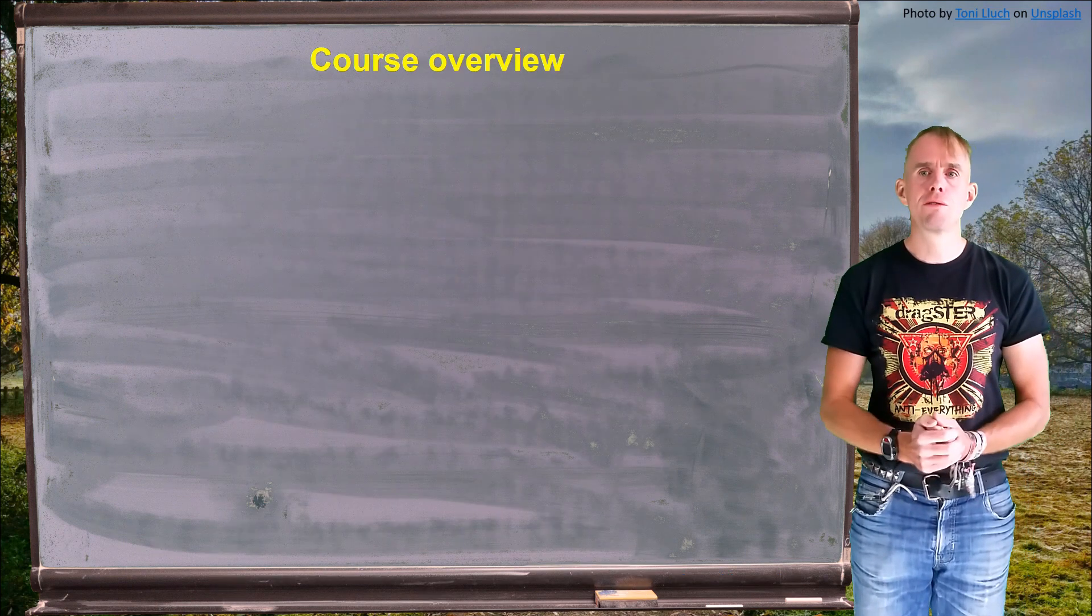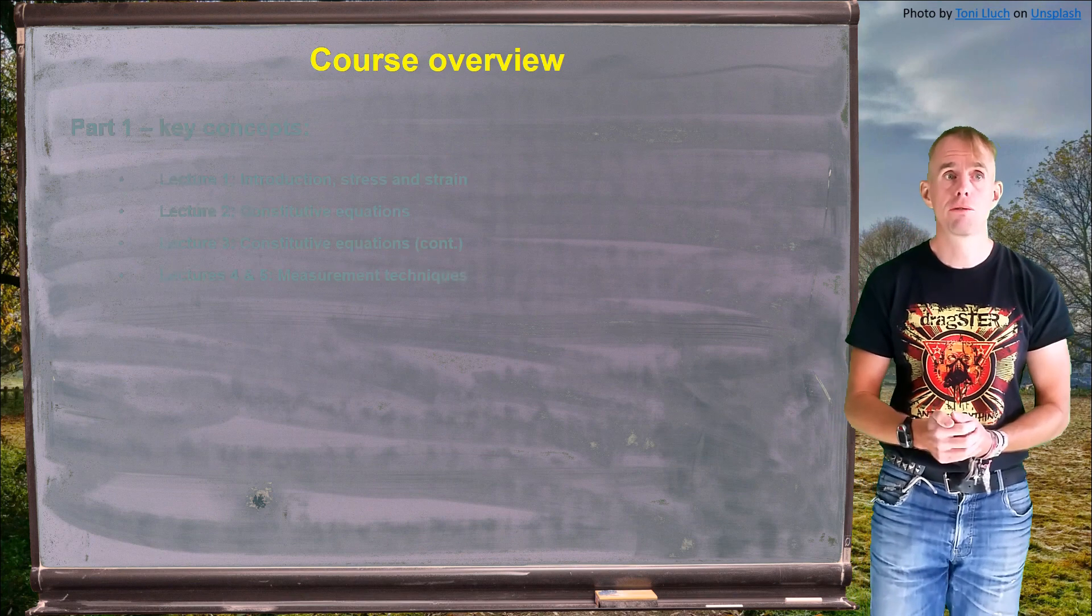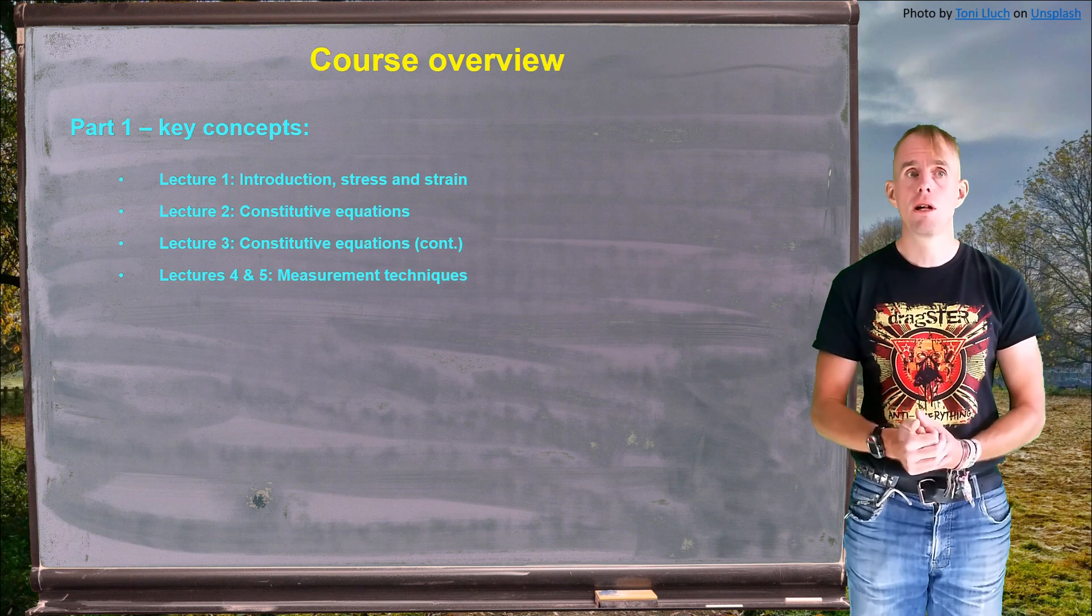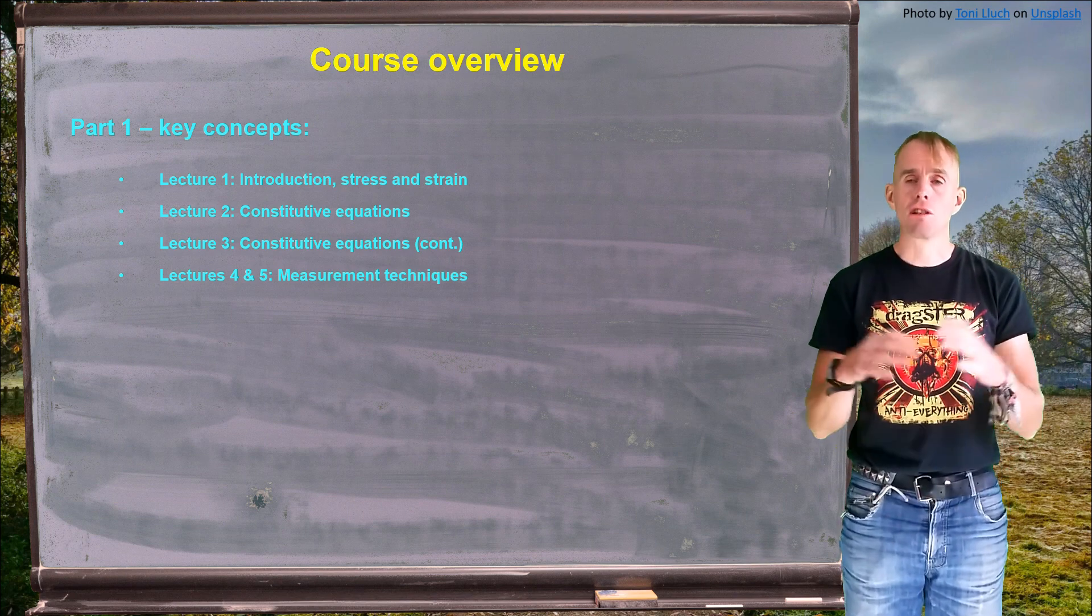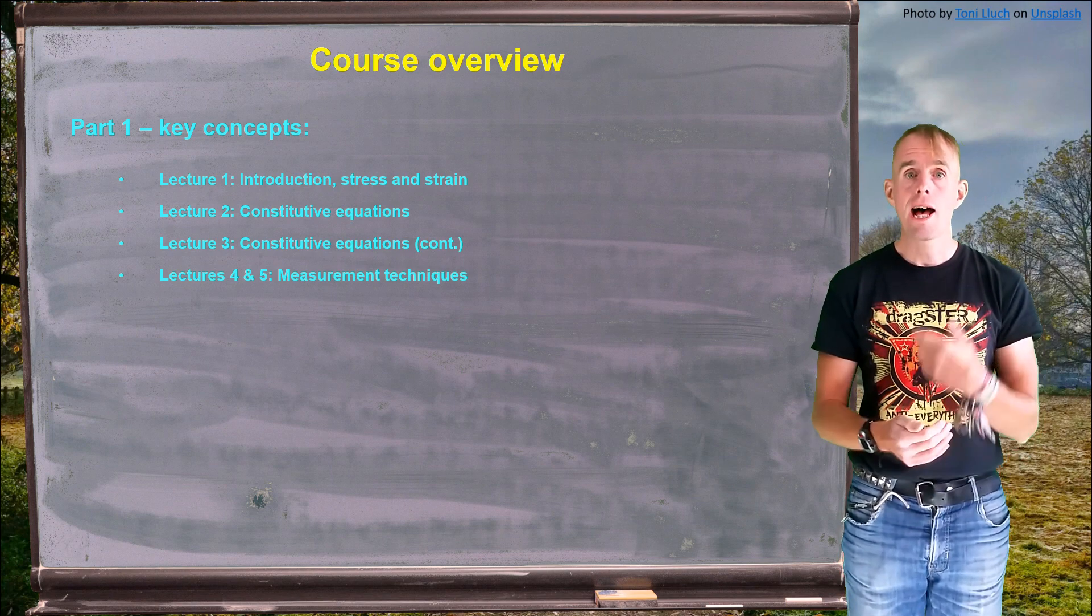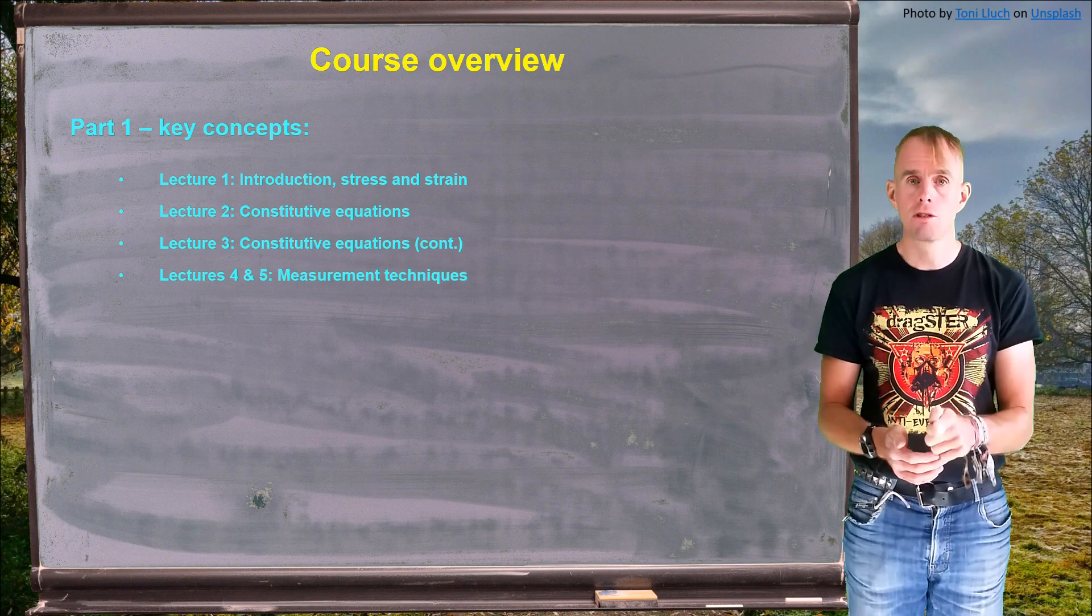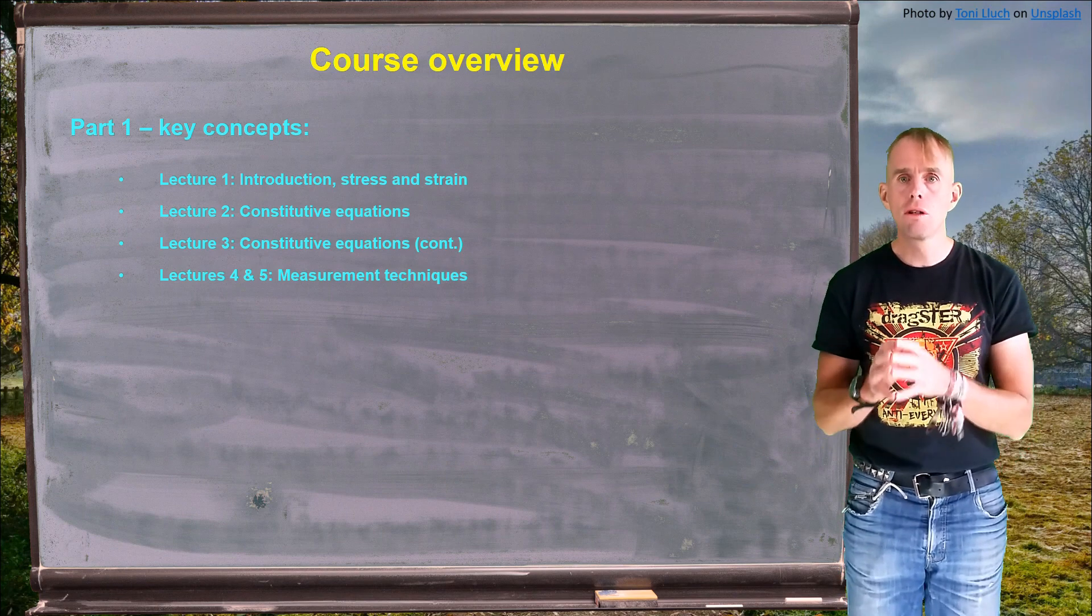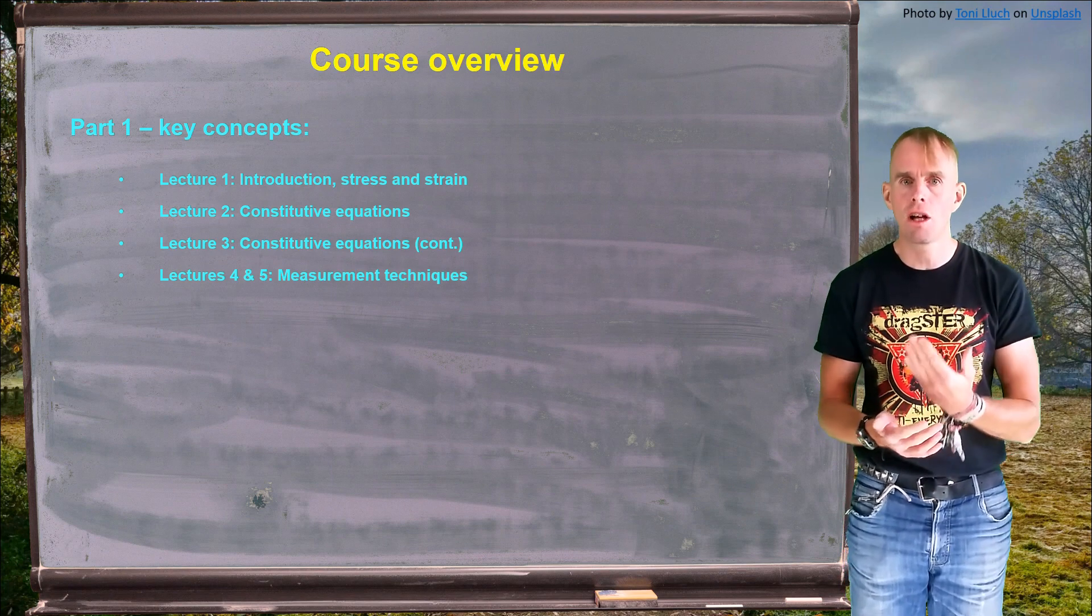Let's go on to give you an overview of this course. This course is divided into four sections. The first section is all around key concepts. I'm going to introduce to you some revision, some stress and strain revision. We're going to have a look at constitutive equations. We're going to remind ourselves of the Newtonian constitutive equation and for specific solutions to the Newtonian constitutive equation, Couette flow and Poiseuille flow. We're then going to look at some measurement techniques that rheologists commonly use to try and characterize unknown materials.